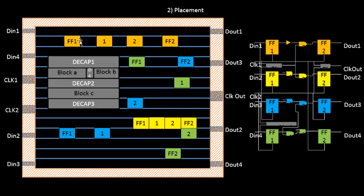The problem with placing flip-flop 1 very close to the macro is that routes from that area may interfere with other routes. The output DOUT4 is far away, so flip-flop 1 would have to travel a long routing path. We find an optimal placement for flip-flop 1, but the challenge is that this placement is too far from DIN4. We need to ensure the signal sent from DIN4 reaches flip-flop 1's input with the same shape and size without any deterioration.